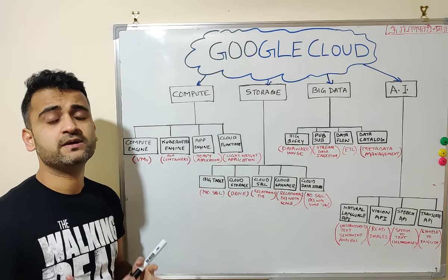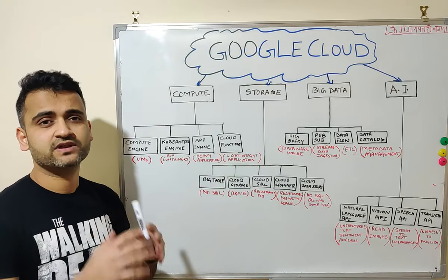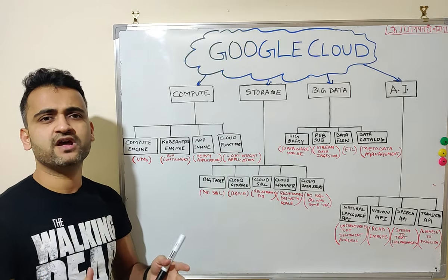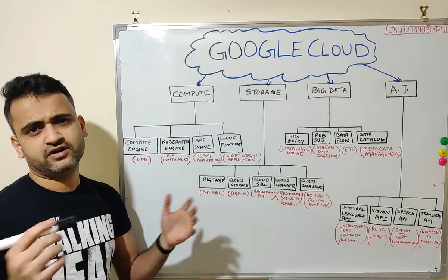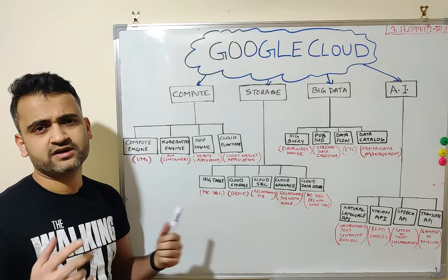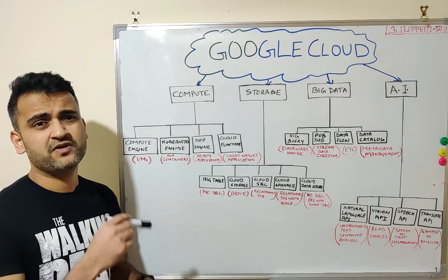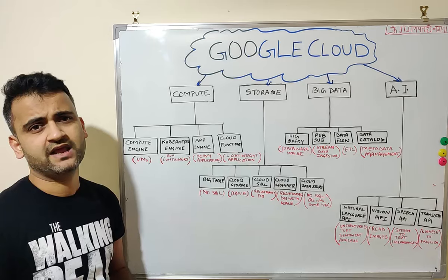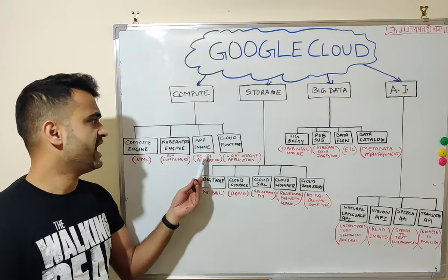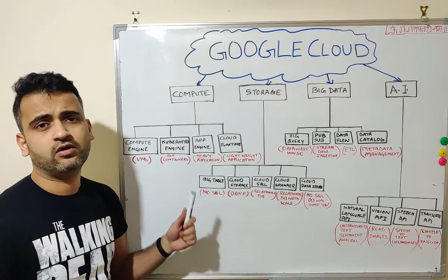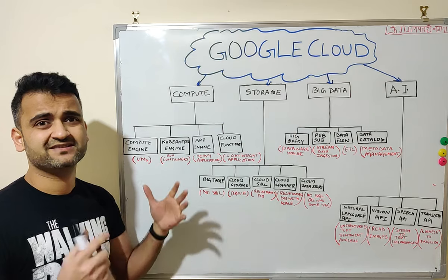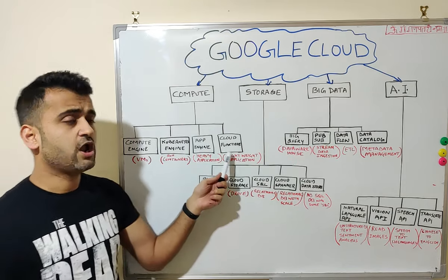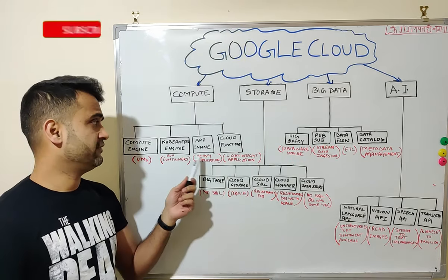Moving on, App Engine, as the name suggests, is an application engine where you can deploy your web applications and large-scale applications without any headache of managing the back-end infrastructure. For example, you can deploy a customized e-commerce website using languages like Go, Python, Java, or .NET. That application can be easily deployed and scaled on App Engine — it is a managed service where all infrastructure is managed by Google Cloud.